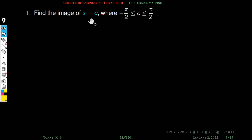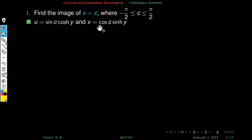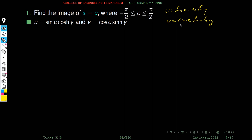Our first problem: find the image of x equal to c, which is a straight line parallel to the y-axis, with the restriction that c is between minus π/2 and plus π/2. We substitute x equal to c into u and v: u equals sin(c)·cosh(y) and v equals cos(c)·sinh(y). We need to identify the shape of this image in the w-plane, so we formulate a relation between u and v.